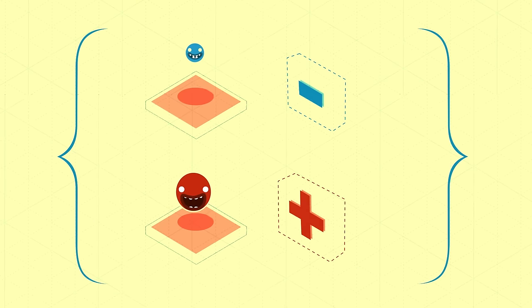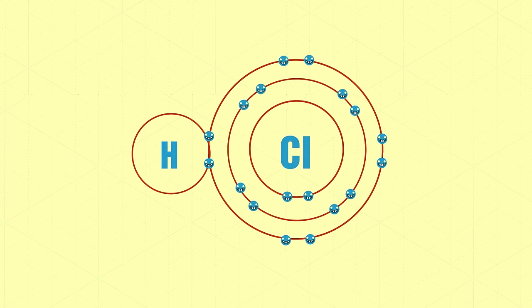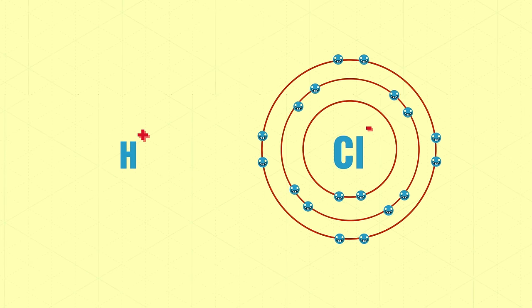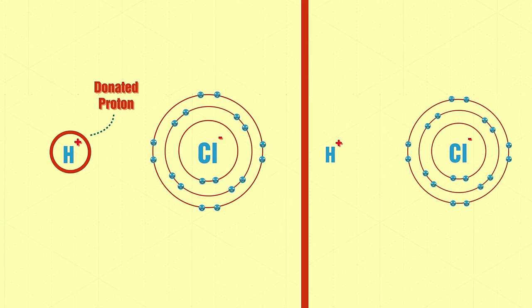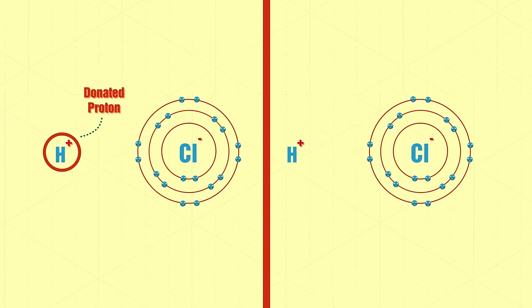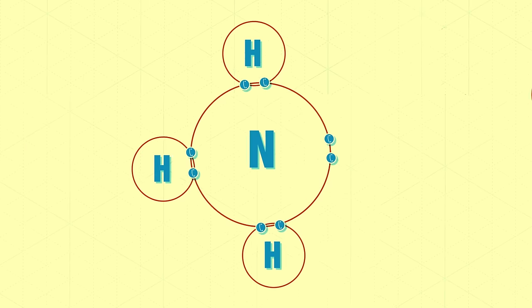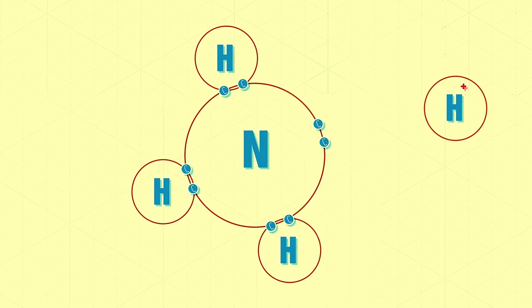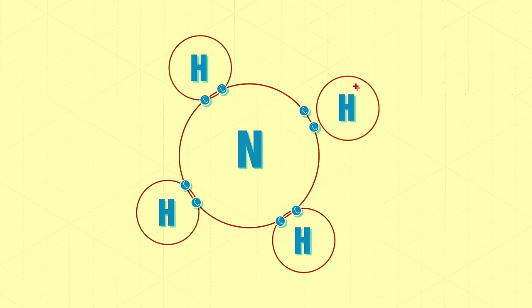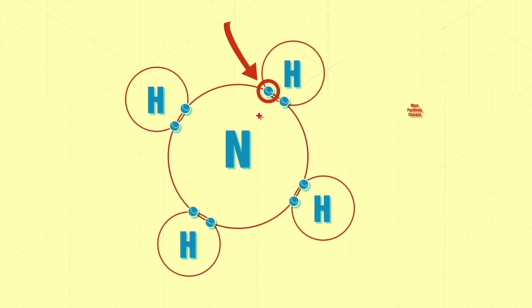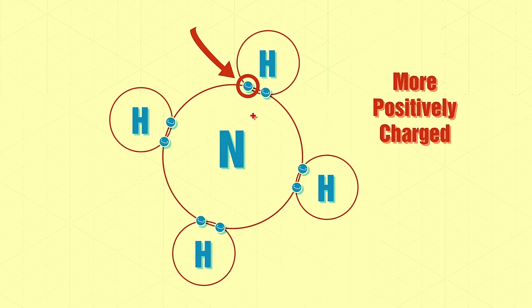Remember that protons are positively charged and electrons are negatively charged. So if a molecule is willing to give up a proton, that's not too different from it being willing to accept an electron — either way, it's becoming more negatively charged. Other molecules are willing to accept a proton or give up an electron — these are becoming more positively charged.